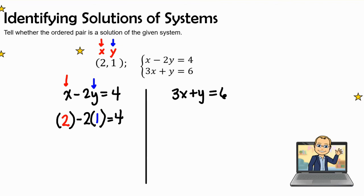Now we know that this point is on this line if both sides of this equation are equal to each other. So I have 2 - 2(1) = 4. And 2 - 2 is 0. And 0 does not equal 4. So this point is not on this first line.